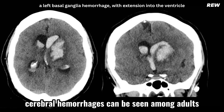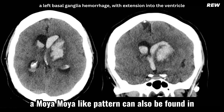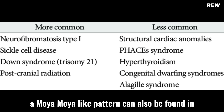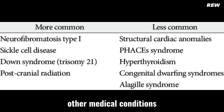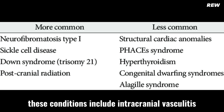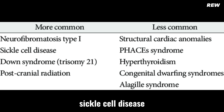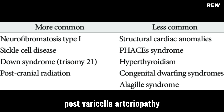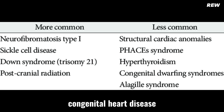Cerebral hemorrhages can be seen among adults. A Moya Moya-like pattern can also be found in other medical conditions that result in an occlusive vasculopathy. These conditions include intracranial vasculitis, sickle cell disease, post-varicella arteriopathy, previous radiotherapy, Down syndrome, congenital heart disease, or type 1 neurofibromatosis.